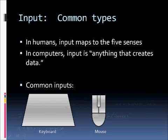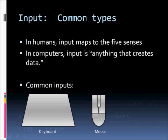Input comes in common types and uncommon types. The common types we're going to talk about are keyboards and mice. In humans, input generally maps to the five senses: touch, taste, smell, hearing, and so on. But in computers, input is anything that creates data. That data is then input via the computer through the keyboard or the mouse.